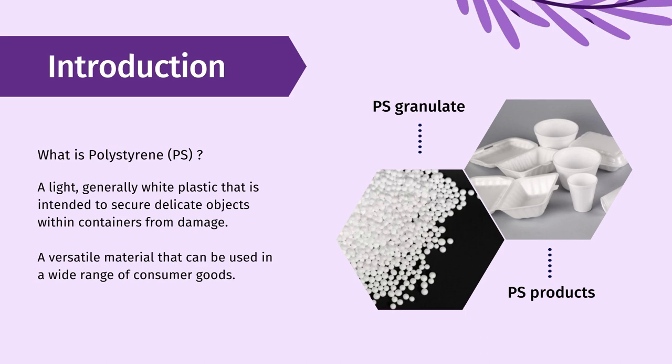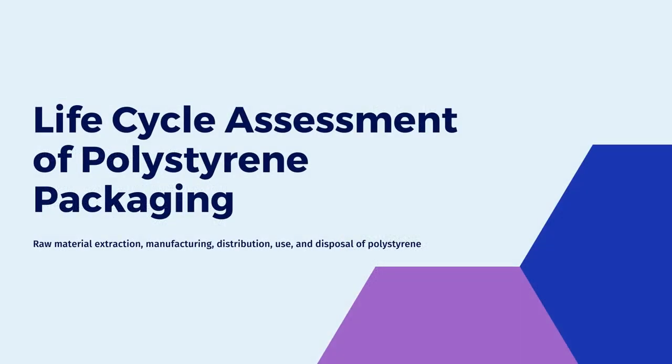Polystyrene is used to produce appliances, electronics, vehicle parts, toys, gardening pots and equipment, and more when mixed with various colorants, additives, or other polymers. Polystyrene was used in numerous ways. In this video, a life cycle of foamy polystyrene trays used for fresh meat packaging was discussed.